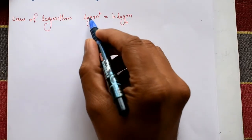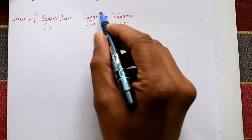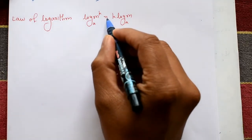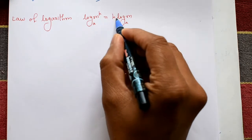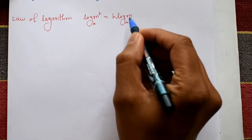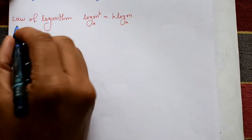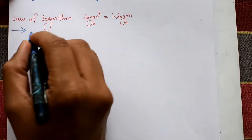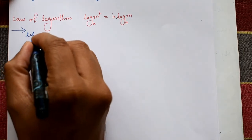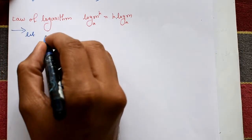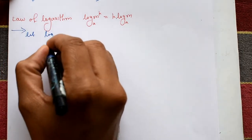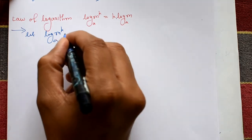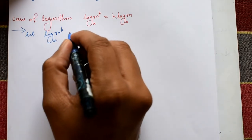Law of logarithm: log of m raised to k, to the base a, is equal to k into log m to the base a. Now, proof. Let us first take log m raised to k to the base a is equal to...